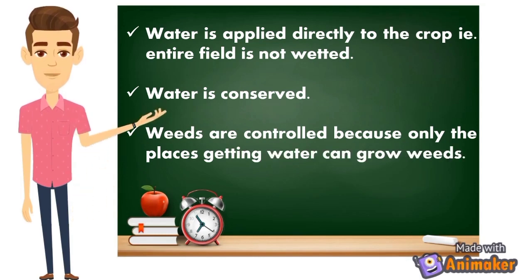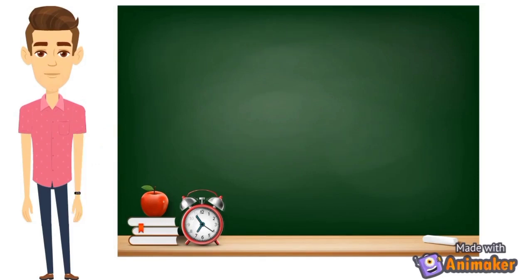Weeds are controlled because only the places getting water can grow weeds. If other places in your area are dry, weeds won't grow immediately. Only within the surface area of your plant where it gets wet will weeds grow, because weed seeds will only sprout when they get wet. If they don't get wet, the weed seeds won't sprout.